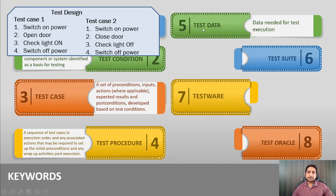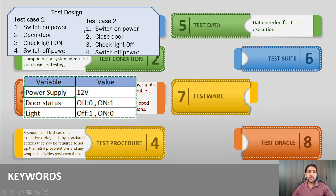Test data is data needed for test execution. When we want to execute test cases, we need specific data — for example, the power supply voltage (12V), and the door status (0 = closed, 1 = open). These are the data values we need to feed to the test cases so they can execute automatically. All data needed for execution is referred to as test data.